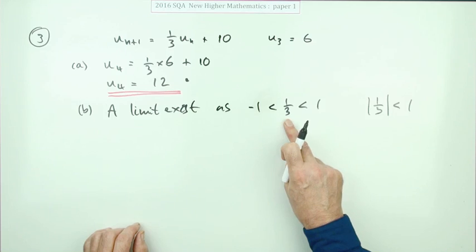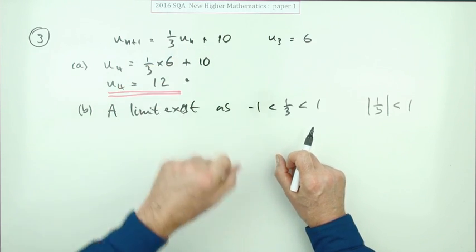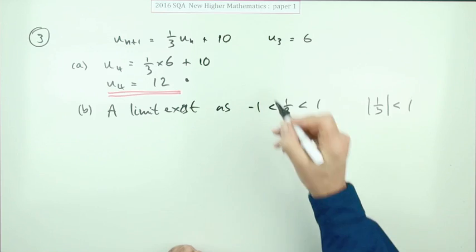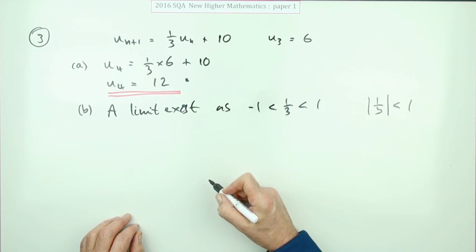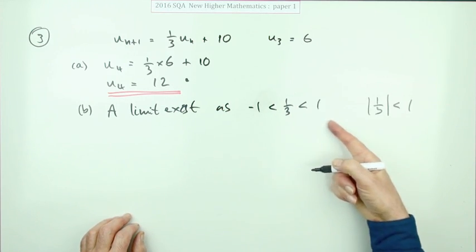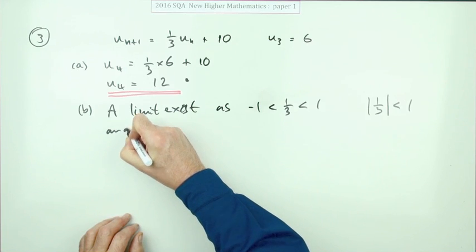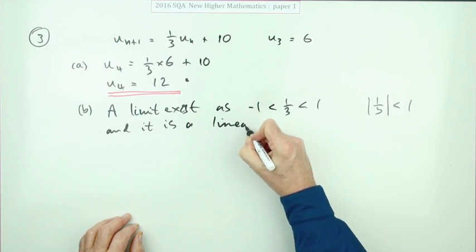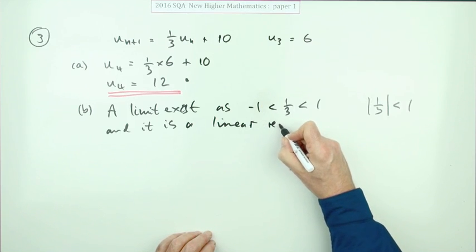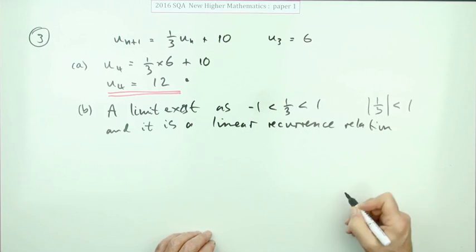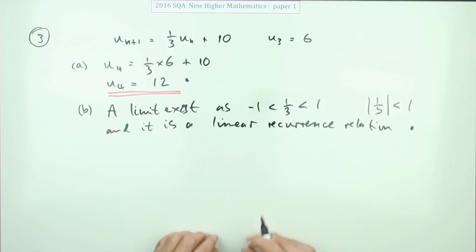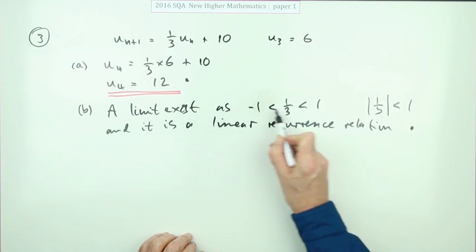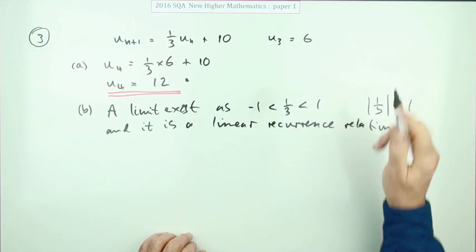You'd have to also put in the qualification there. This limit exists, yes, because the coefficient of the linear term is a proper fraction, but also because it is just a linear recurrence relation. As it's a proper fraction and it is a linear recurrence relation, that's even more you're meant to write in future. That gets the second mark, although that's for future use, I presume. This is the statement that would have got this mark.